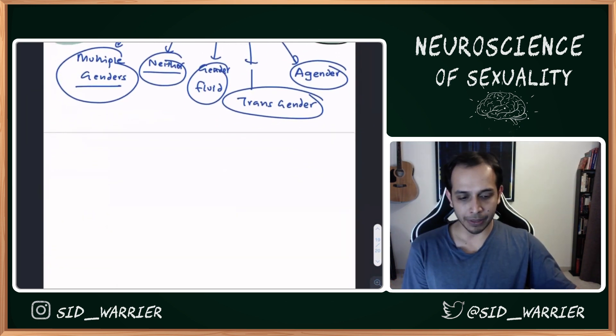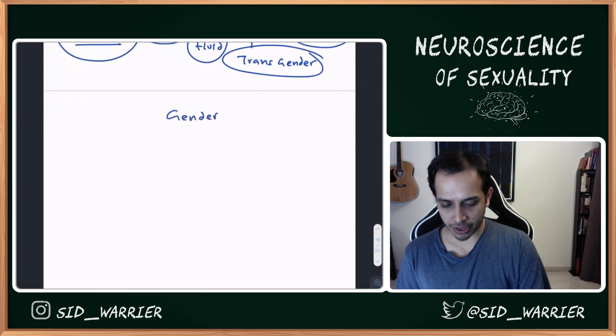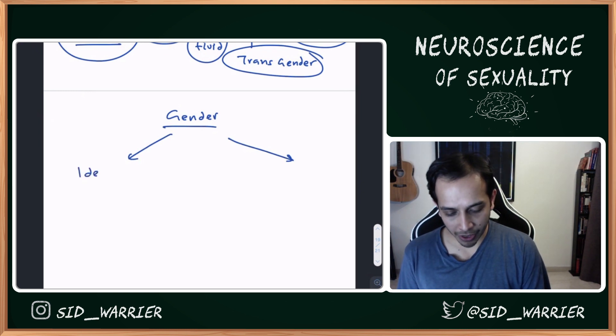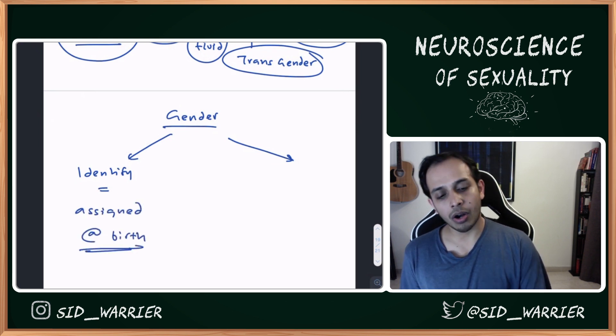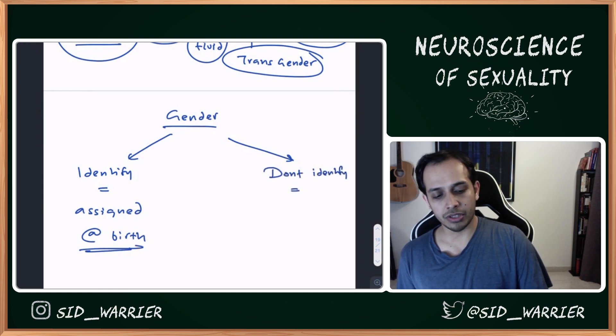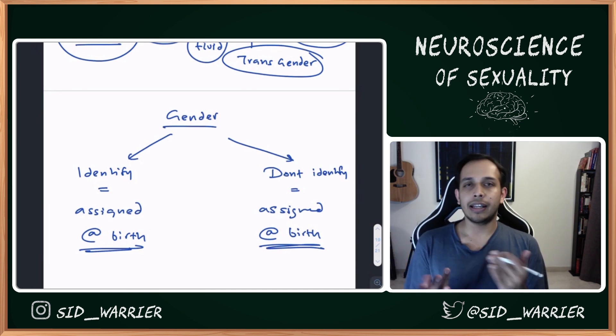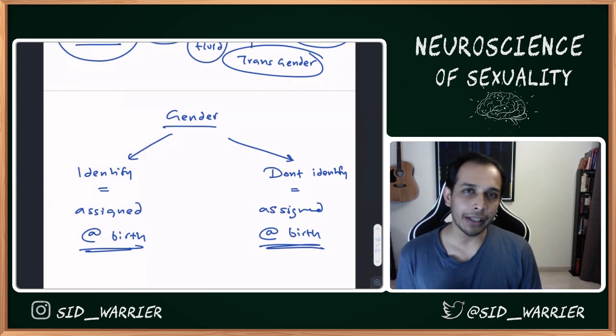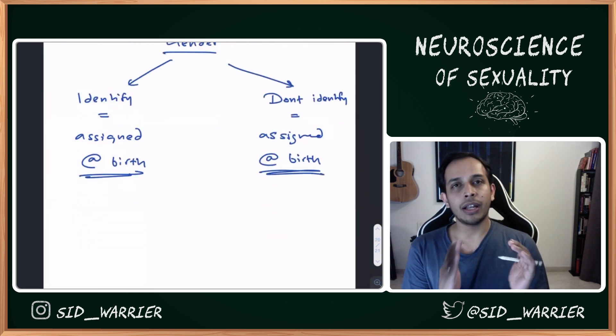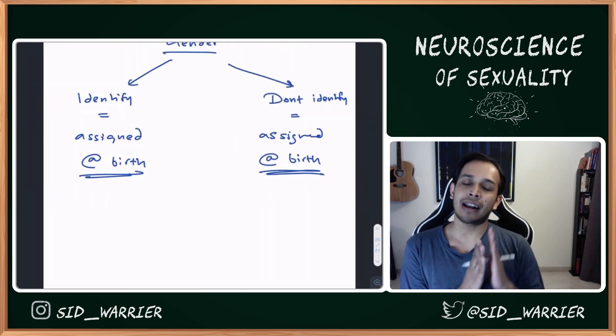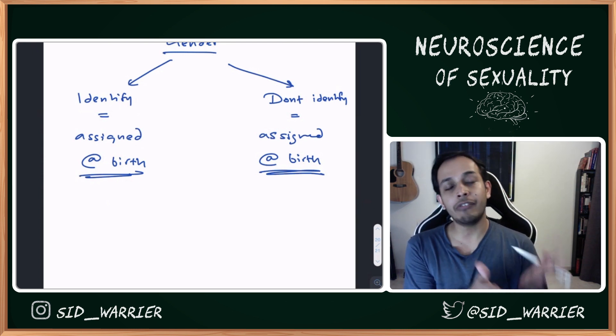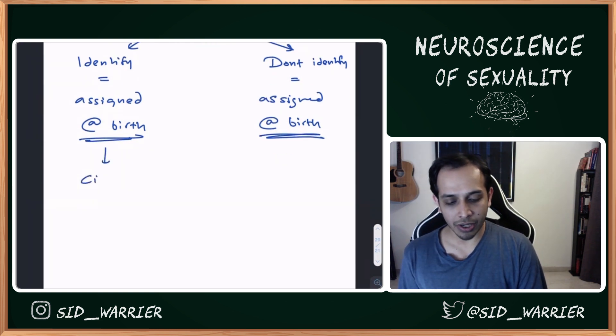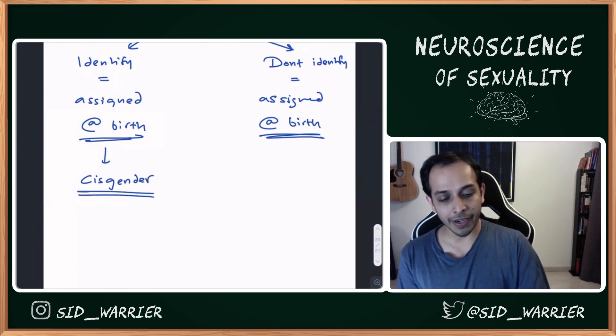To put it very simply, there are two types of gender: one is if you identify with the gender you were assigned at birth, or you don't identify with the gender you were assigned at birth. Everyone is assigned a gender at birth. You can either identify with it, saying yes my parents did the right thing, or no, my parents and society were wrong in assigning that gender. If you do identify, that's called cisgender. If you don't identify, that's transgender.